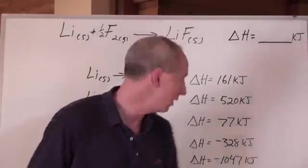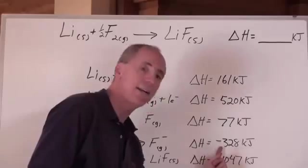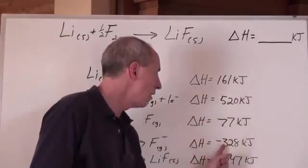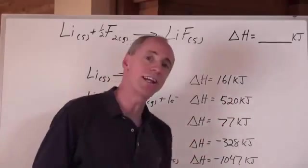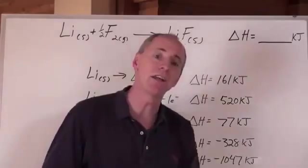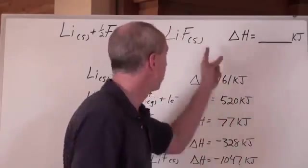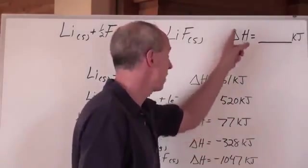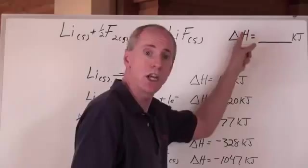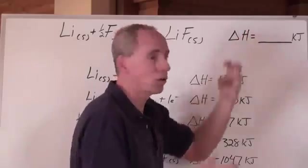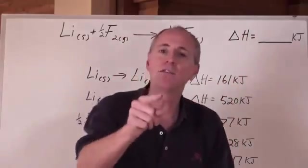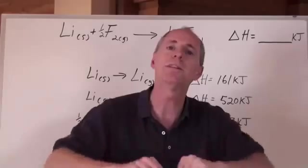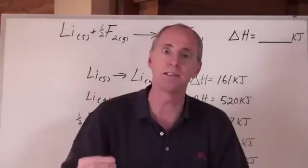Since energy is released for electron affinity, we make it negative. If we added all these together, we're starting to get into the negatives. The net change in energy — that's what the delta symbol means — is starting to be negative. Negative means exothermic, and exothermic means energy is released.